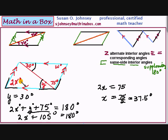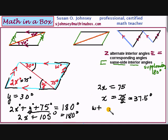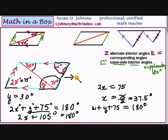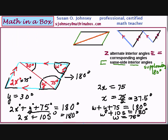Now we need to find W. W is created by a parallel line, and this line that comes down to another parallel line — we have same side interior angles again. For that equation, I would write W plus these two angles down here, which create the one at the bottom: Y plus 75. These are same side interior angles, so they are equal to 180 degrees. The W plus these at the bottom add up to 180 degrees. We know Y was 30 degrees, so I can put 30 in for Y. 30 plus 75 is 105, so W plus 105 equals 180. And we used alternate interior angles and same side interior angles.